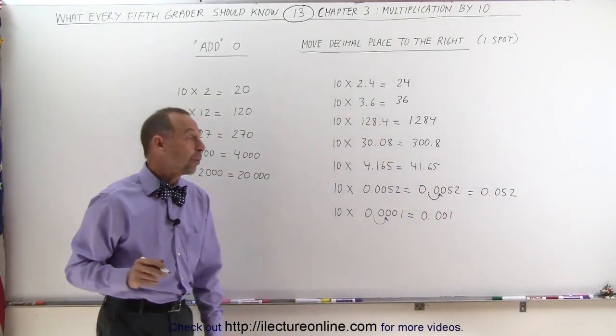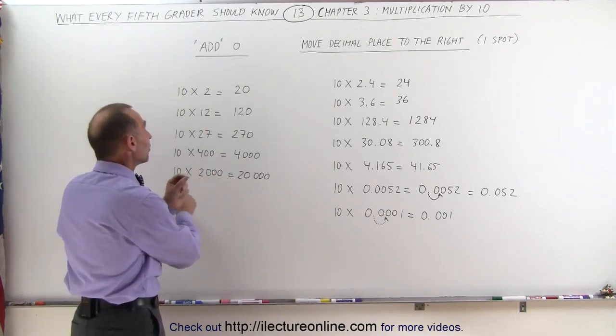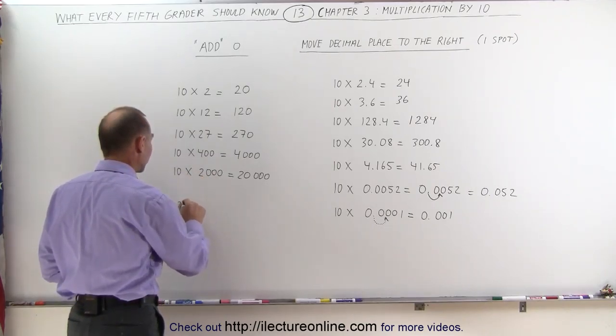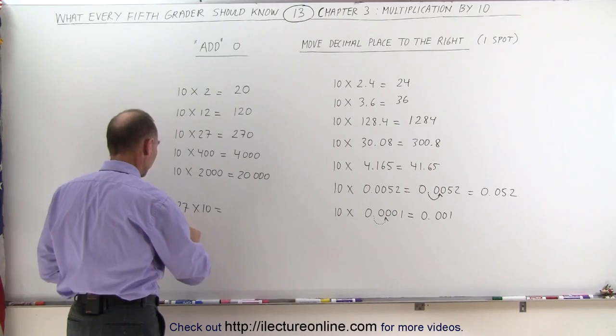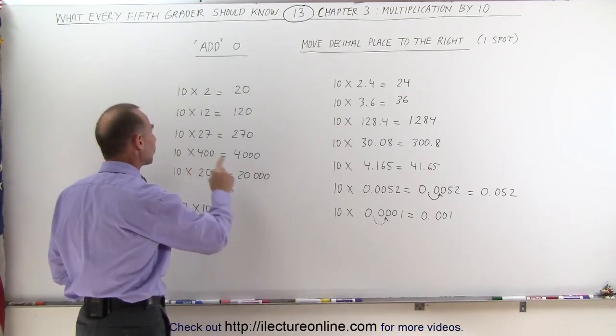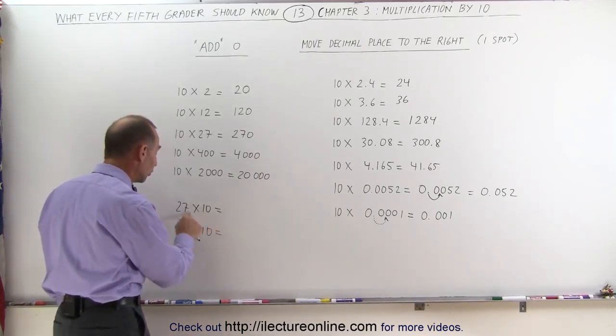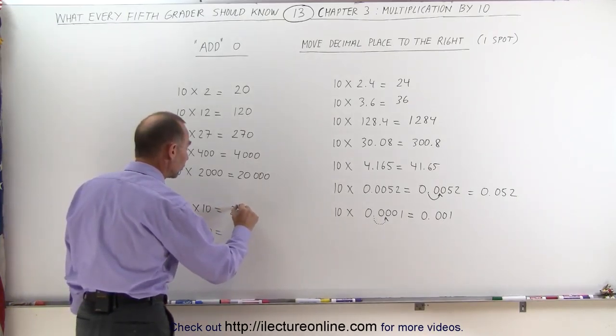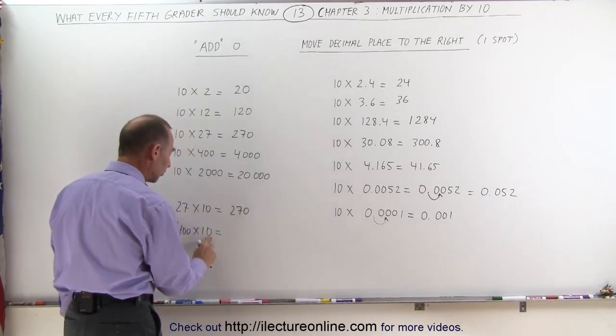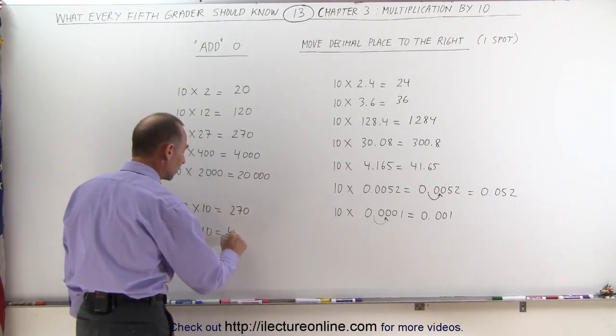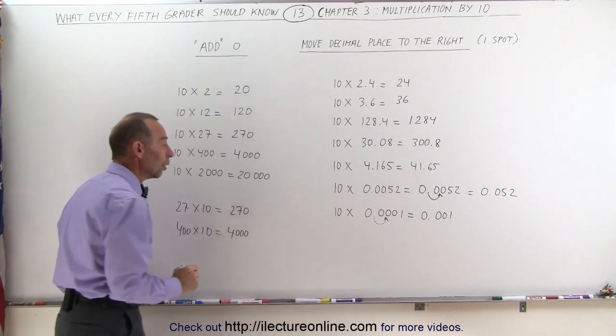Another thing we should be aware of is, what if we have these things in reverse? What if we have the number 27 times 10, or the number 400 times 10? It doesn't matter if it's 10 times 27 or 27 times 10. We simply add this 0 to the other number, and this becomes 270. We simply add this 0 to the other number,